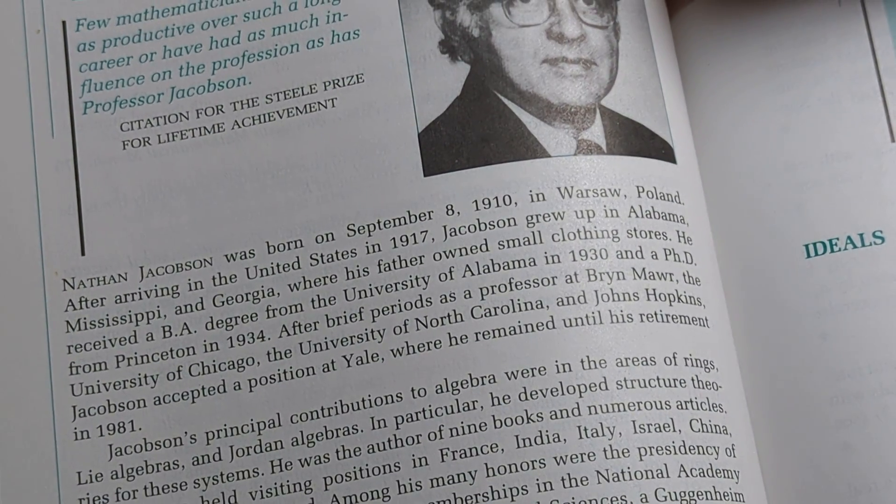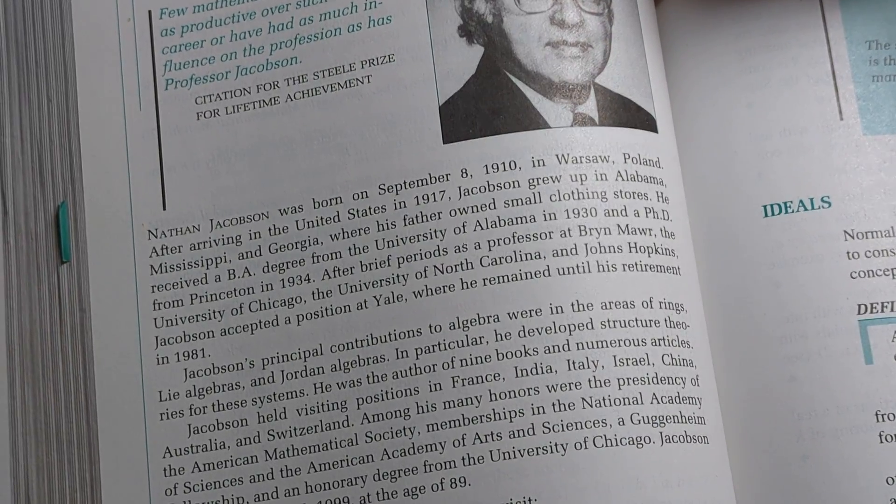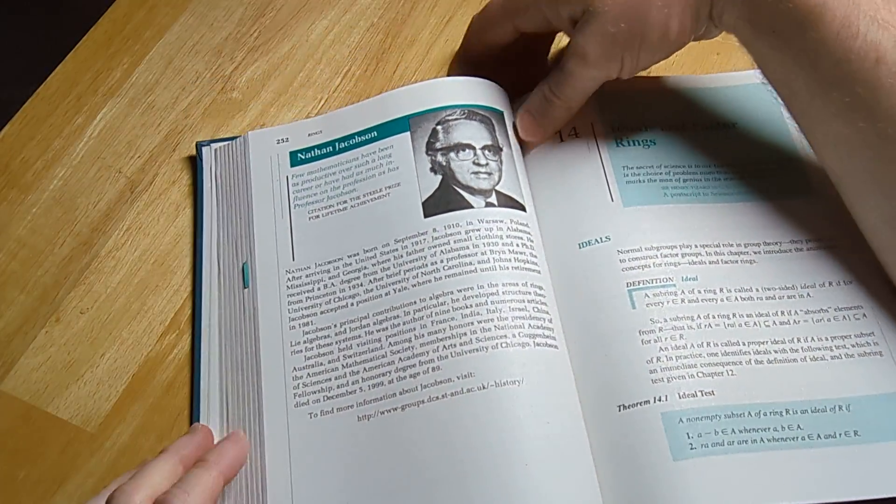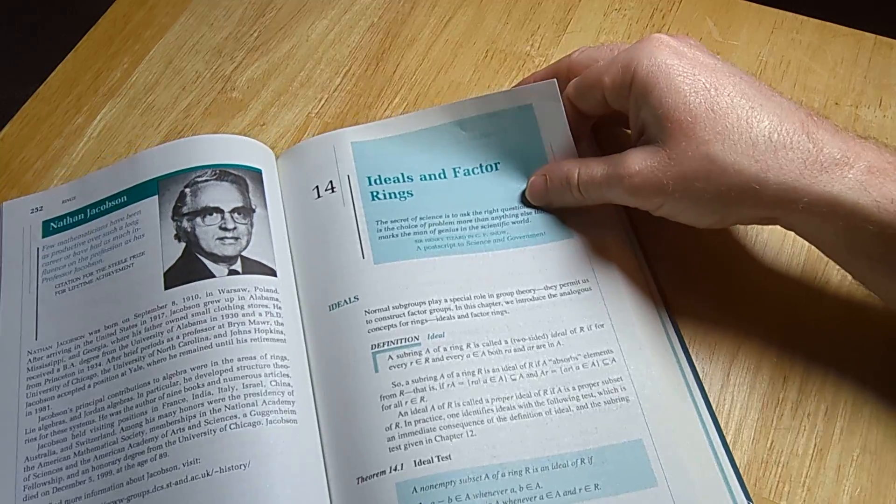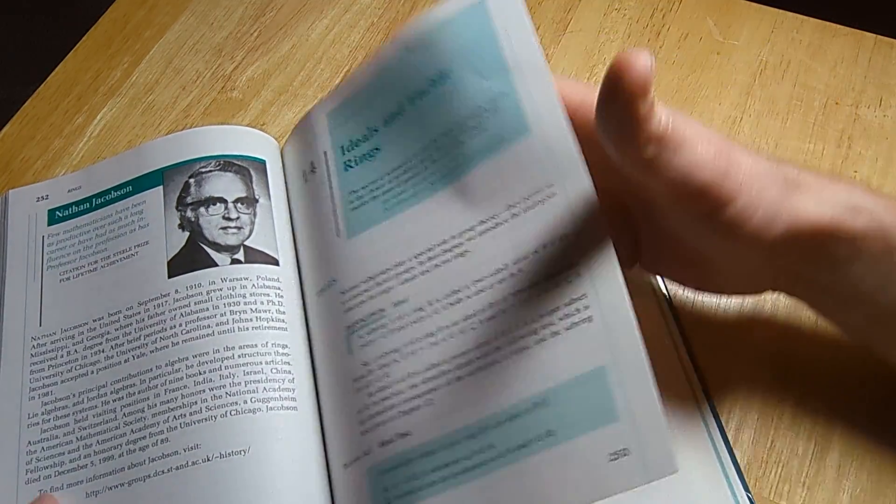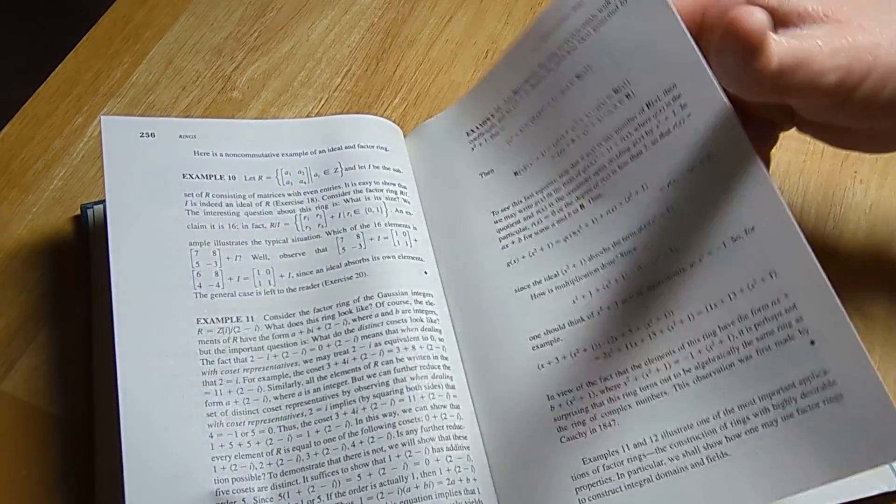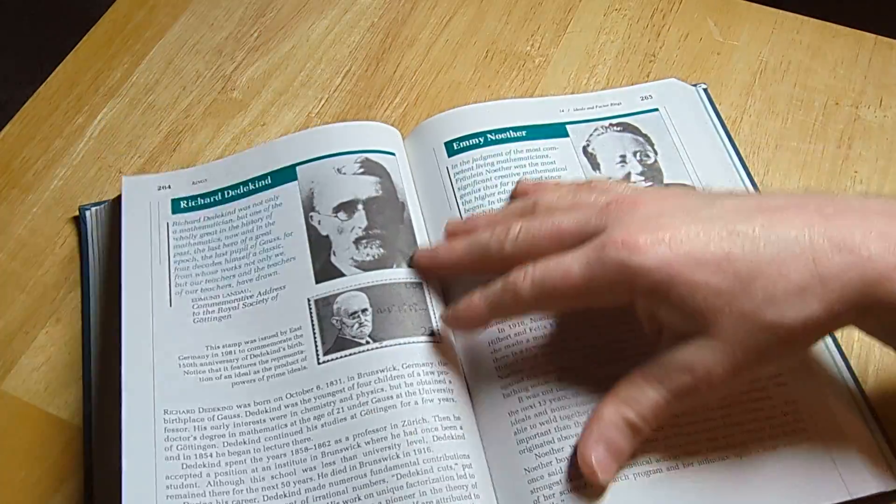Cool. He died in 1999 at the age of 89. Wow. Ideals and factor rings. It's good stuff. It's not hard. You just have to build up to it.